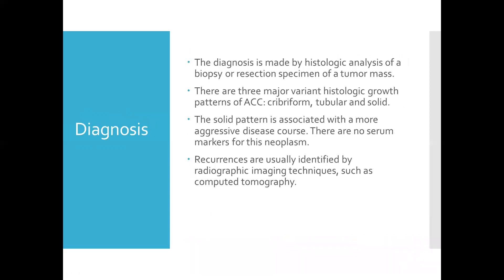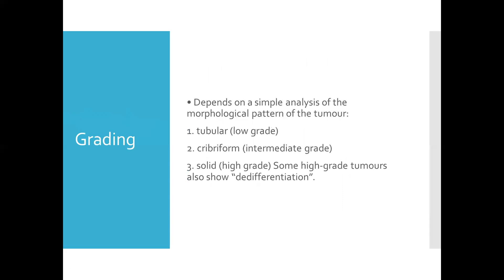Diagnosis is made by histologic analysis of a biopsy or resection specimen of a tumor mass. The three major histologic growth pattern variants of ACC are cribriform, tubular, and solid — with the solid pattern associated with more aggressive disease course. There are no serum markers for this neoplasm; recurrences are usually identified by radiographic imaging such as CT scan. Grading is based on morphologic pattern: tubular is low grade, cribriform is intermediate grade, and solid is high grade. Some high-grade tumors also show dedifferentiation.